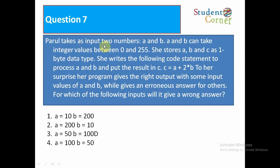Parul takes as input two numbers A and B. A and B can take integer values between 0 and 255. She stores A, B, and C as 1-byte data type. She writes the following code statement to process A and B and put the result in C: C is equal to A times A plus 2 times B. To her surprise, her program gives the right output with some input values of A and B while giving an erroneous answer for others. For which of the following inputs will it give a wrong answer?